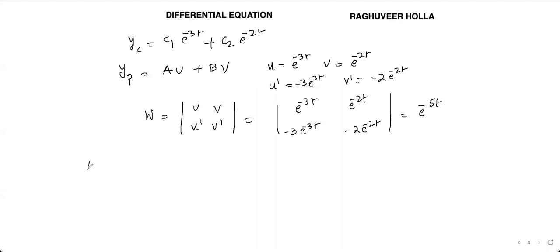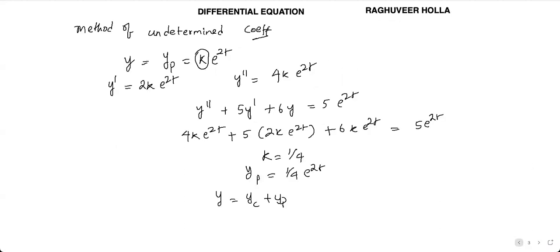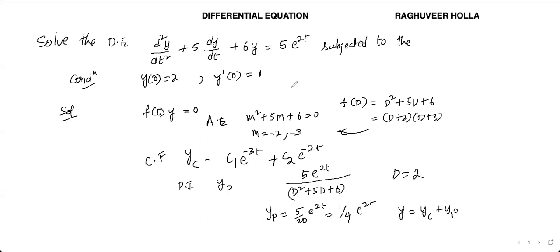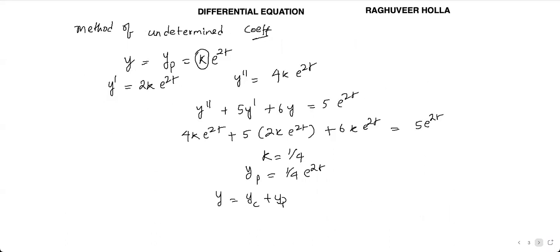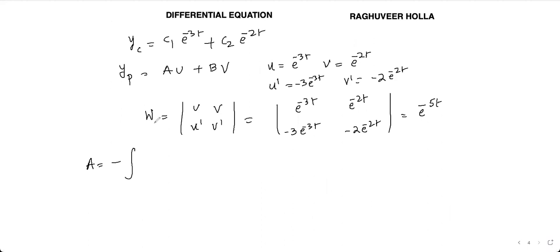To find a, we compute the integral: a = -∫[v · g(t) / W] dt, where g(t) = 5e^(2t) is the right-hand side. This becomes -∫[5e^(2t) · e^(-2t) / e^(-5t)] dt, which gives a = -e^(5t)/1 evaluated appropriately, simplifying to -e^(5t).